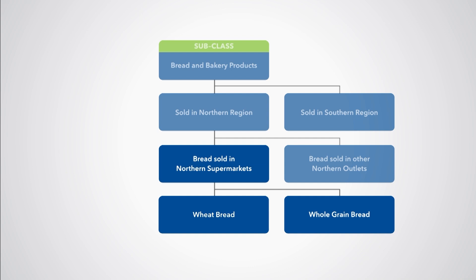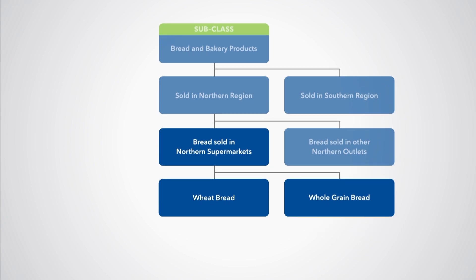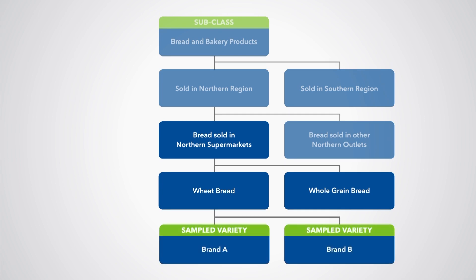Of course, additional representative products might be selected in practice. Finally, for each representative product, several specific varieties should be selected for price collection, such as particular brands of wheat bread. The number of sampled varieties selected depends on the nature of the representative product and the relative changes in price across outlets.